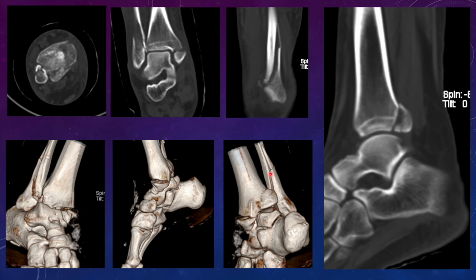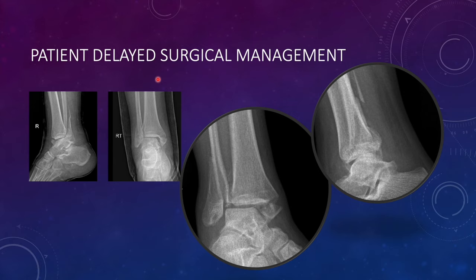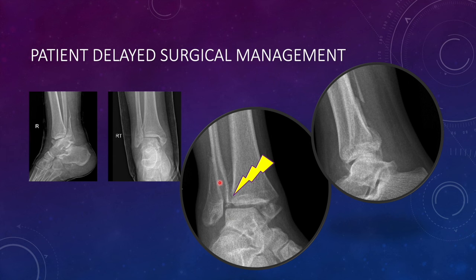The spike of the lateral malleolar fracture also shows comminution. A problem then occurred — the patient visited the OPD after four weeks of injury. The displacement had increased, and the shortening, which was not much initially, had definitely increased with overriding of the fracture. Comminution was getting replaced by callus formation, the medial malleolar fracture became grossly displaced, and the whole talus had shifted laterally due to this unstable fracture pattern.